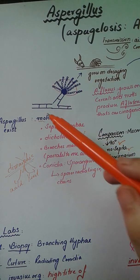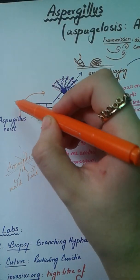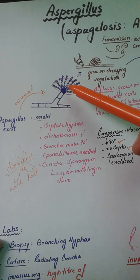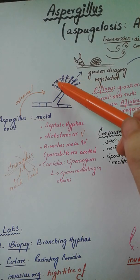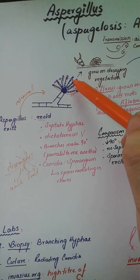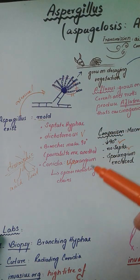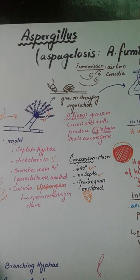Aspergillus divides asexually by forming spores. At the end of the hyphae, spores give rise to radiating chains of small conidia — baby spores. These conidia are radiating outward and are not encapsulated, unlike Mucor which is encapsulated. Because these conidia produced asexually do not possess a sporangium, whereas if multiple conidia are enclosed inside a structure, that is called a sporangium.